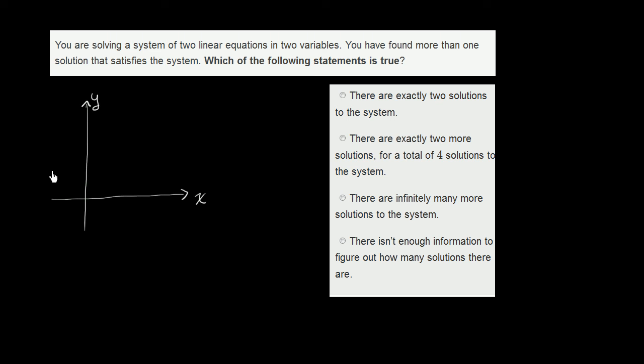There's another scenario where they intersect in exactly one place. There's one point, one xy-coordinate right over there that satisfies both of these constraints. But this also is not the scenario they're talking about.